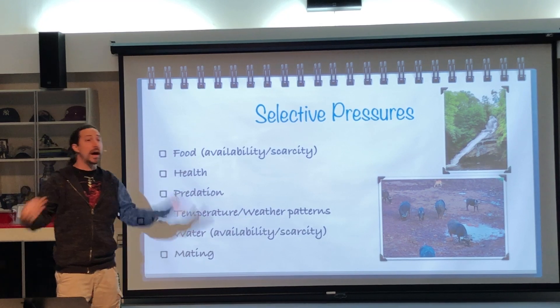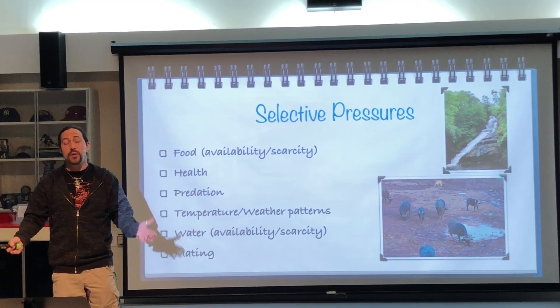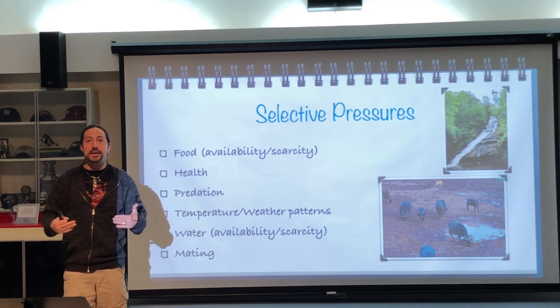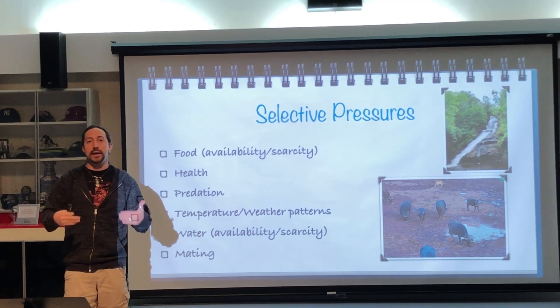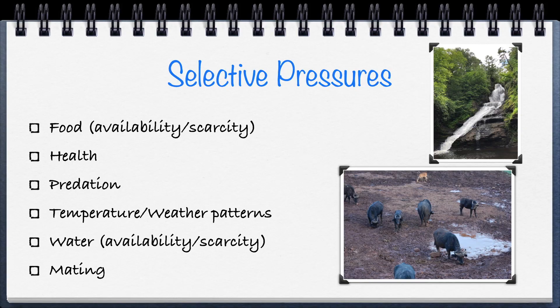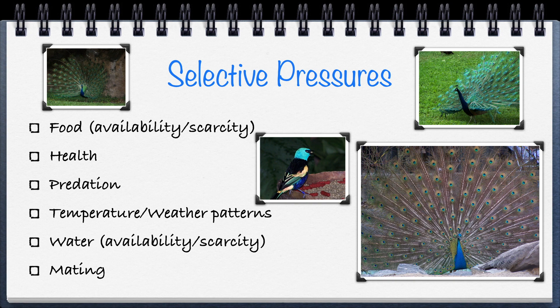Water is perhaps the most valuable resource — we all need it, and it determines what can live where. Lastly, mating is a selective pressure: all organisms have pressure to pass on their alleles. If they can't find a mate, the next generation will not have those alleles and they will disappear from the population. Finding a proper mate is therefore extremely important for these organisms.